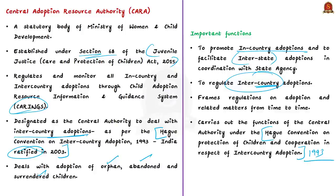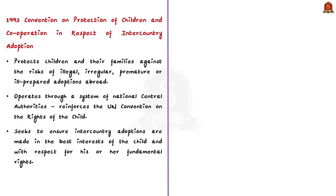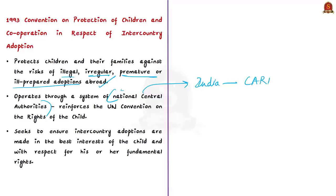The 1993 Hague Convention protects children and their families against the risks of illegal, irregular, premature, or ill-prepared adoptions abroad. It operates through a system of national central authorities and reinforces the UN Convention on the Rights of the Child, or UNCRC. It seeks to ensure that inter-country adoptions are made in the best interests of the child and with respect for the fundamental rights of children.